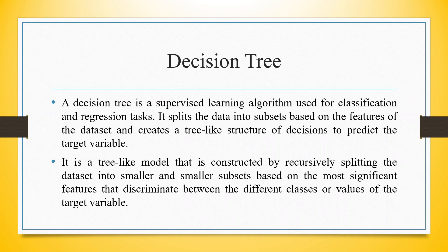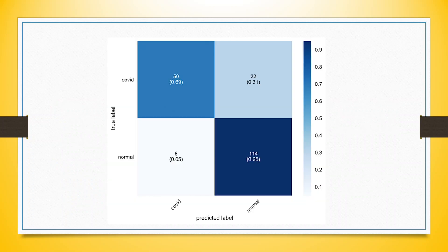A decision tree is a supervised learning algorithm used for classification and regression tasks. It splits the data into subsets based on the features of the dataset and creates a tree-like structure of decisions to predict the target variable. It is constructed by recursively splitting the dataset into smaller and smaller subsets based on the most significant features that discriminate between the different classes or values of the target variable.